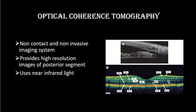In OCT, certain layers are hyperreflective and certain layers are hyporeflective. The retinal pigment epithelium — seen as the red line — is hyperreflective. The central layers of the retina are not very reflective, so they are hyporeflective. The nerve fiber layer is also hyperreflective. This is a normal posterior segment OCT showing the different layers.